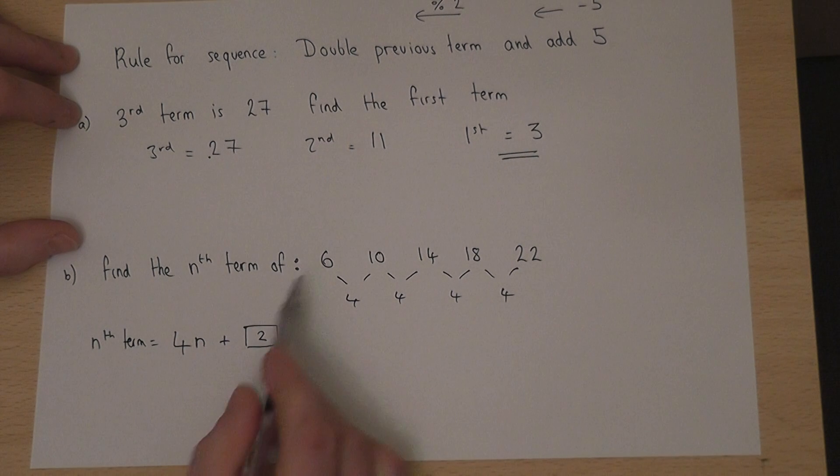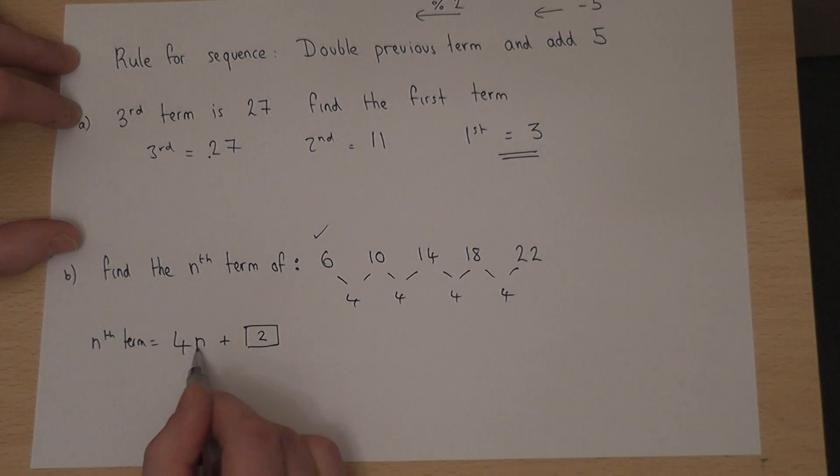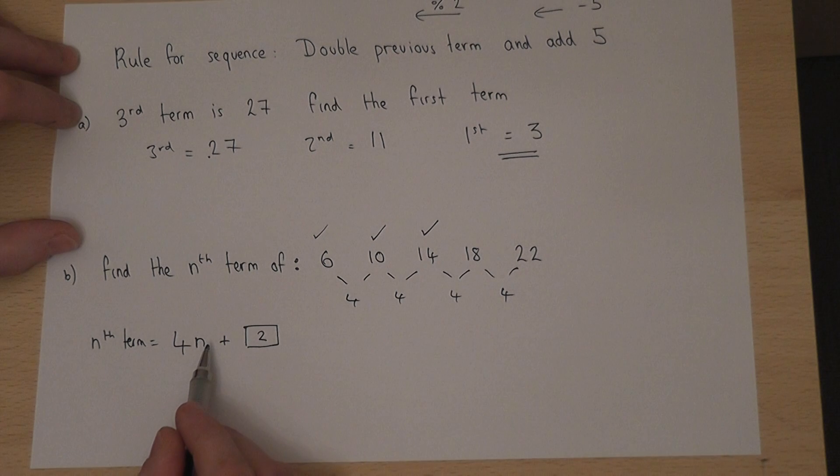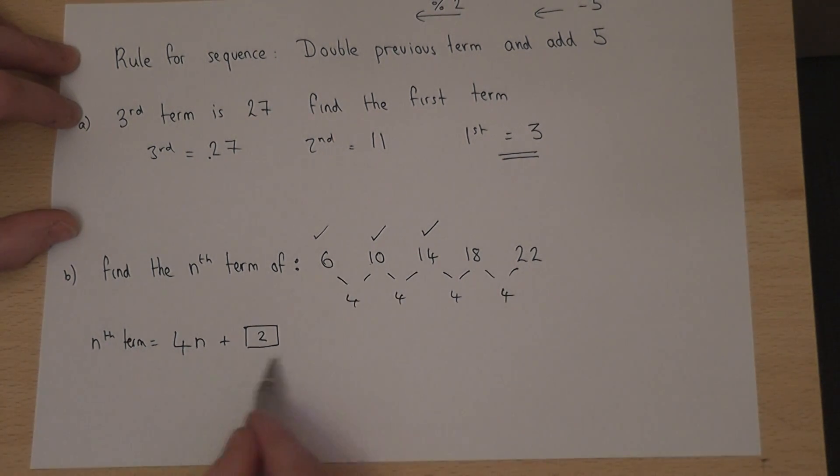To check this, when n is 1, 4 times 1 plus 2 is indeed 6. When n is 2, 4 times 2 is 8, plus 2 is 10. When n is 3, 4 times 3 is 12, plus 2 is 14. So, this sequence correctly evaluates the given sequence, and is therefore called the nth term.